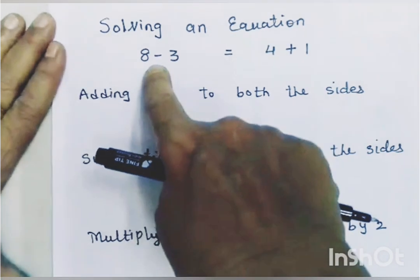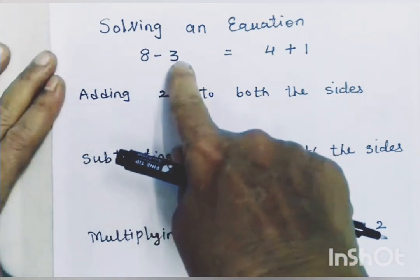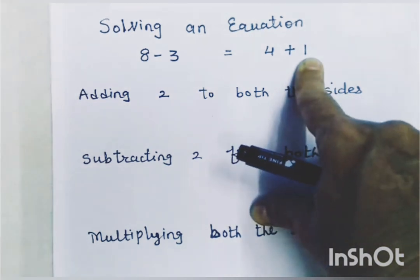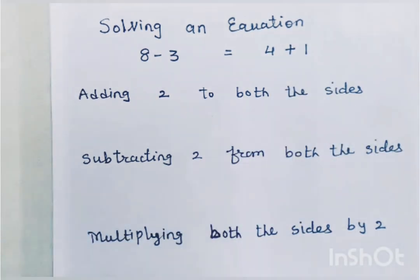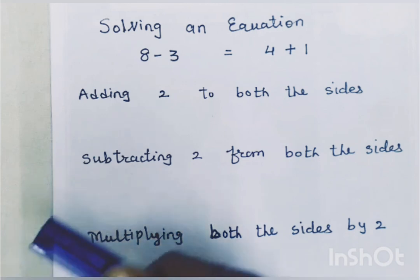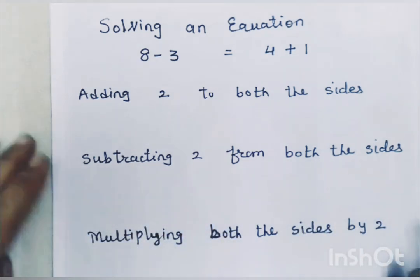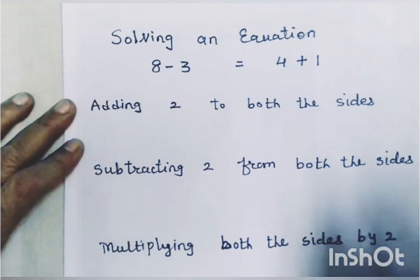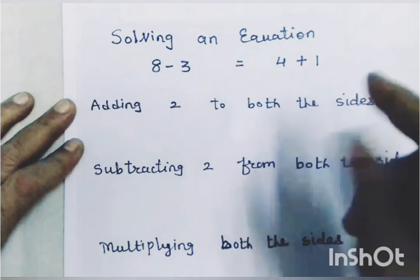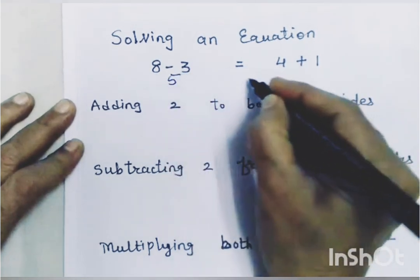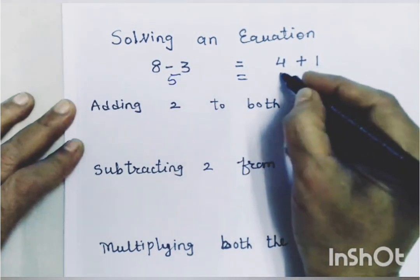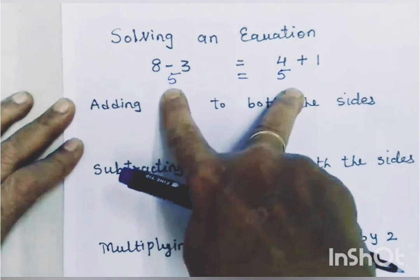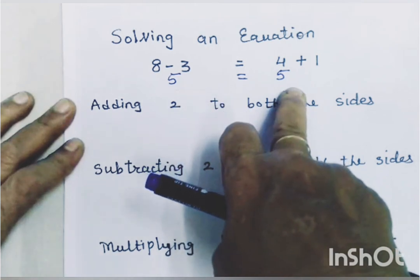Here I have written 8 minus 3 is equal to 4 plus 1. The left hand side is 8 minus 3 and the right hand side is 4 plus 1. The value of the left hand side is equal to the value of the right hand side. 8 minus 3 is equal to 5, and 4 plus 1 is also equal to 5. So the values of both sides are equal.